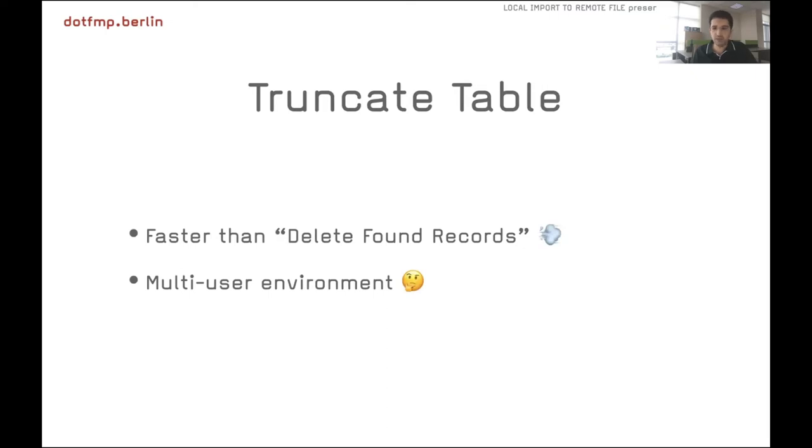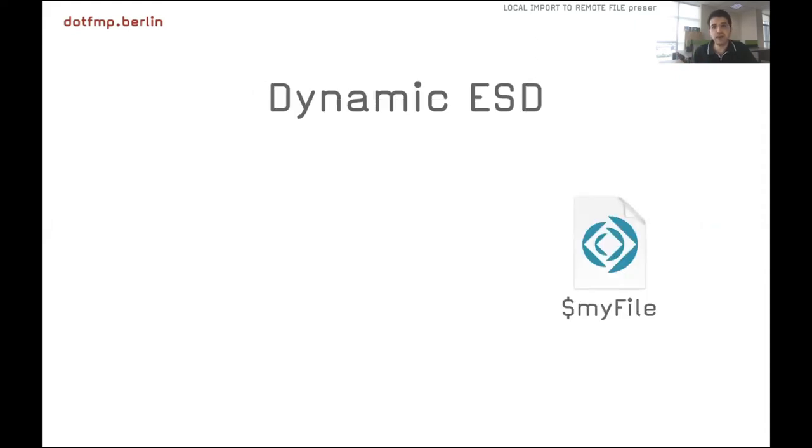Truncate table is faster than delete found records. But we have multi-user environment. We have lots of users, maybe at least five. If you have more than one user, you cannot use a single temp file. Of course you can, sorry - but you should keep track of which records, which temporal records belong to which user. In some cases, truncate table does not work for us because truncate table deletes all the records. But I want to delete only specific users' temporary records. Maybe this is an issue to solve.